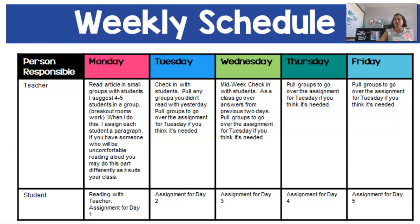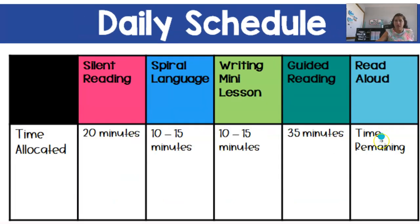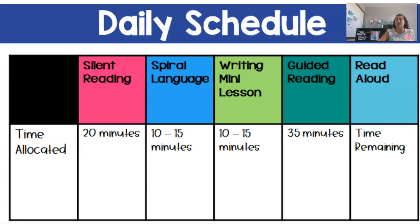By October, other students will turn to your weaker students and say, 'We've been doing this since September — you're supposed to be doing such-and-such.' As far as a daily schedule, it's set up into blocks of almost 20 minutes: silent reading is about 20 minutes, spiral language is 10 to 15 minutes (sometimes up to 20), and I might throw in a writing mini lesson on Thursday or Friday. Students doing guided reading tasks — I put 35 minutes, but it can range from 10 to 50 minutes.